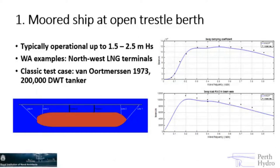There's a classic test case — Van Oort-Mersen's PhD thesis from 1973 — where we did a bit of validation against that case: a 200,000 deadweight tanker at an open berth. It's a pretty simple mooring setup — just four mooring lines and two fenders. It was a nice test case because he went through the radiation problem, the added mass and damping, then the diffraction problem, the wave loads, and then the resulting motions and mooring loads.